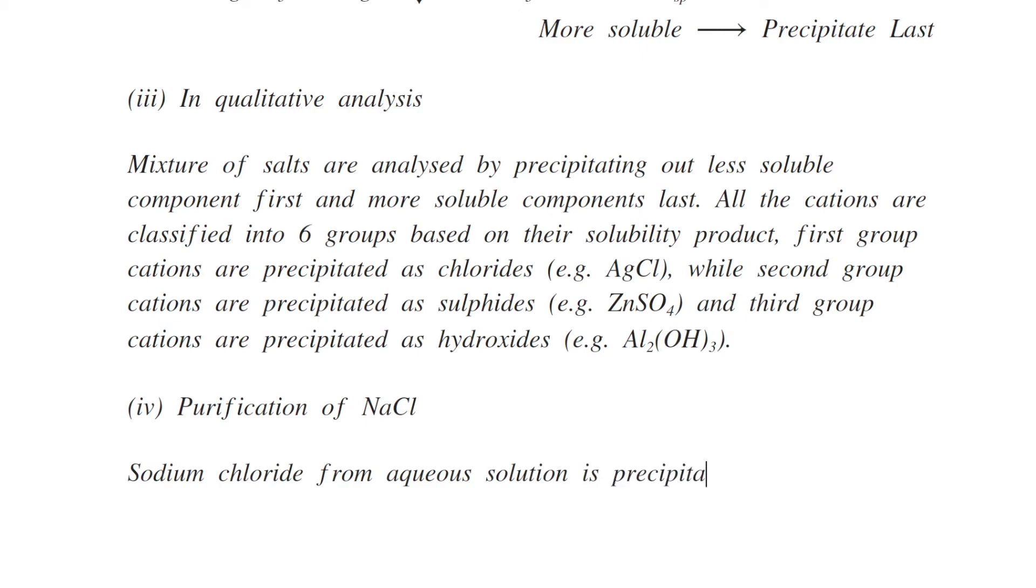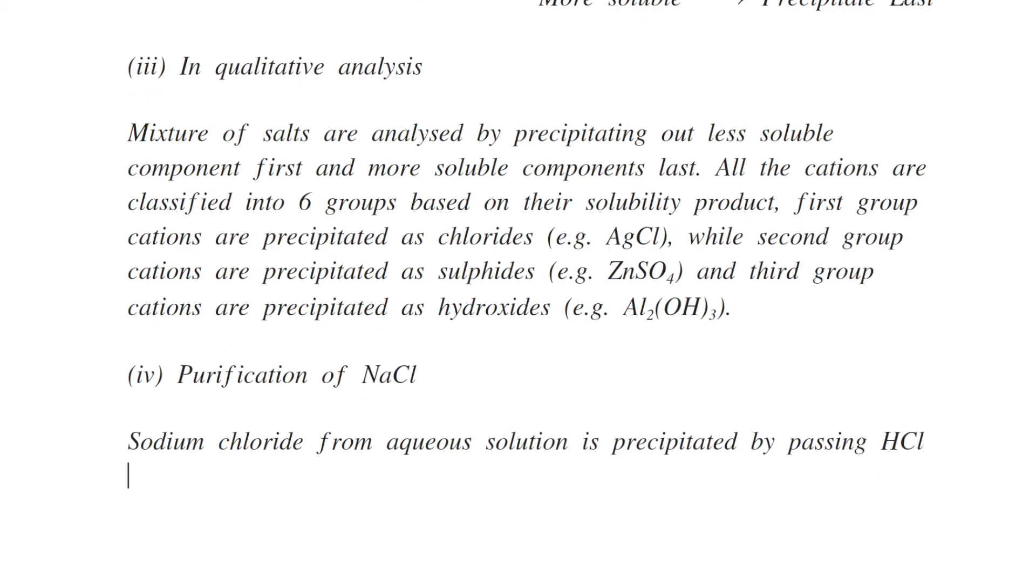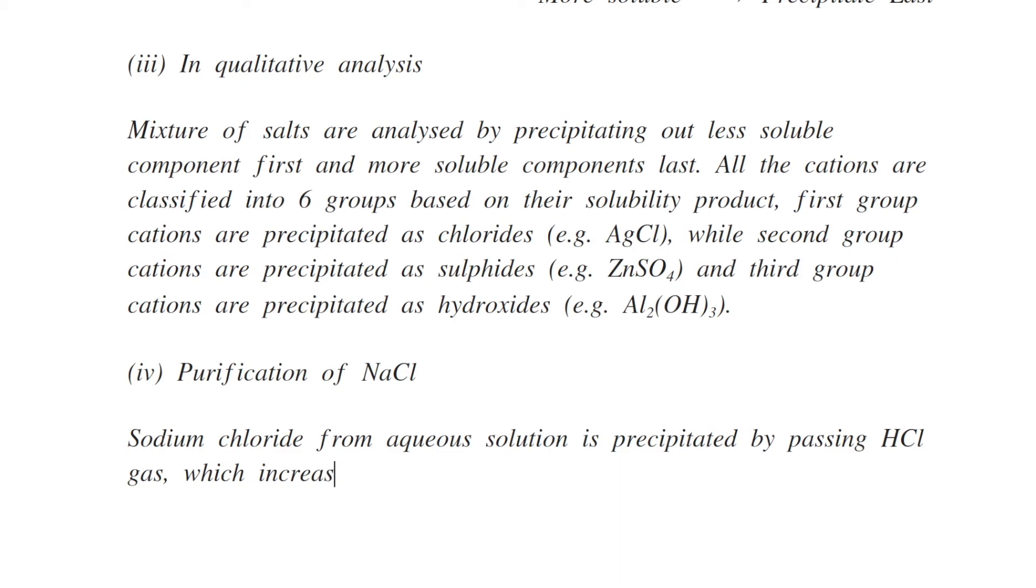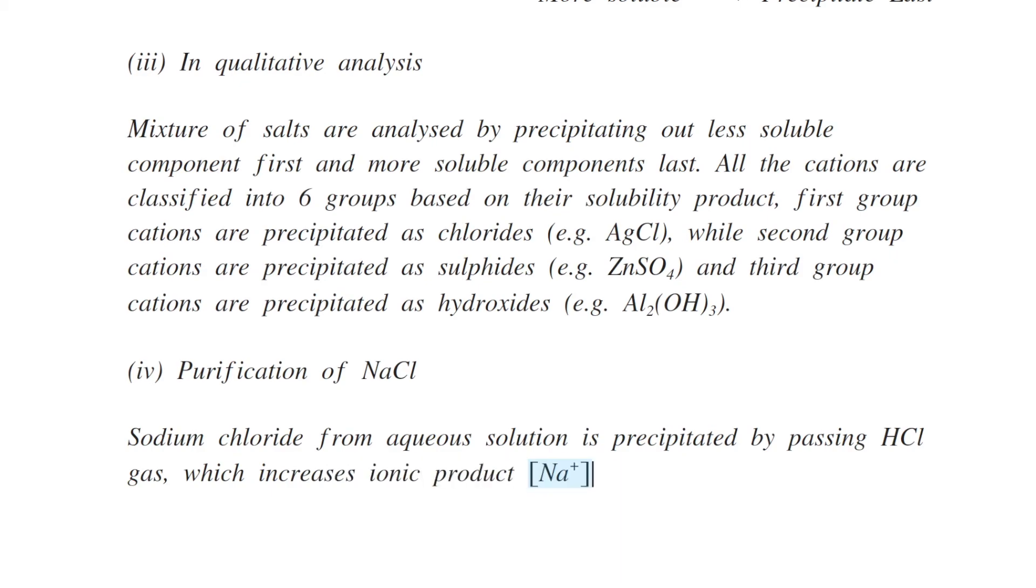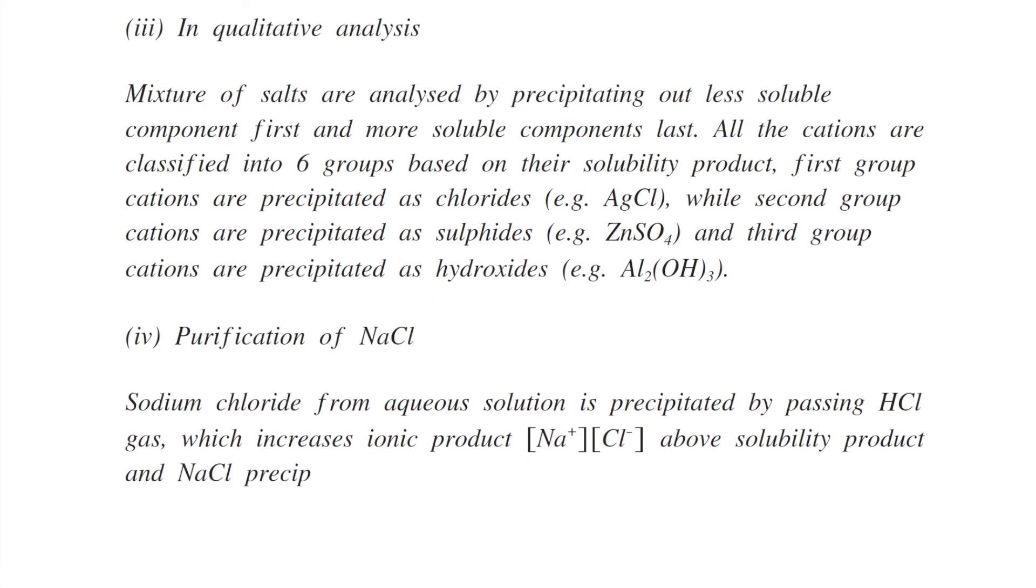This increases the ionic product of sodium and chloride ions above the solubility product of sodium chloride. Therefore, as the ionic product increases above the solubility, it precipitates out in a pure form.